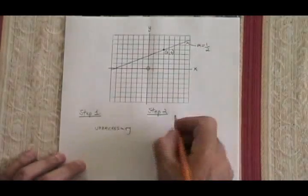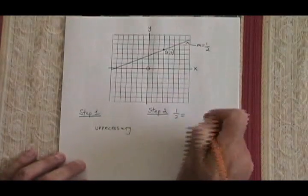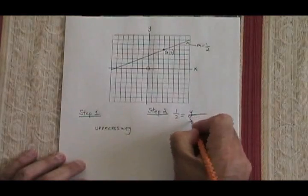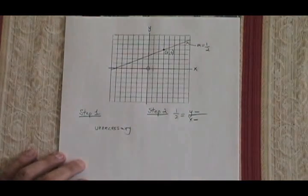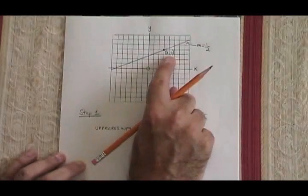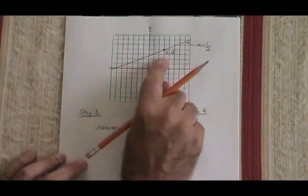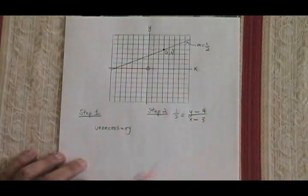Step 2, we take our slope. We set up our slope formula. We put the y and the x in the first positions with minus signs. My y-coordinate is 4 of the point I know, and my x-coordinate is 3. So I plug those in.